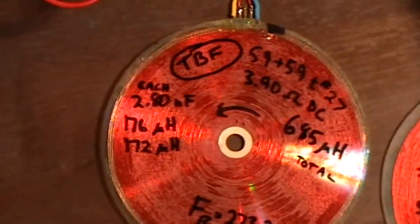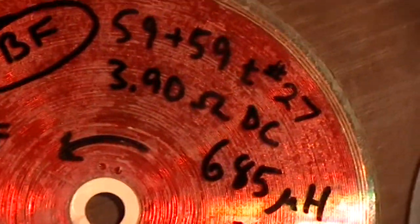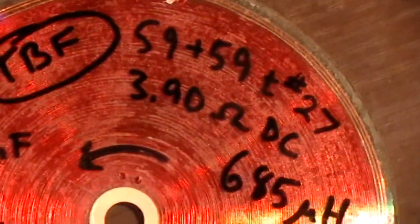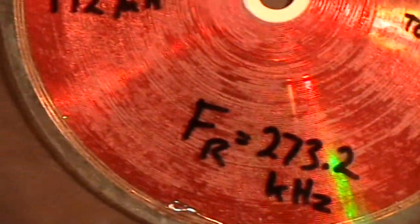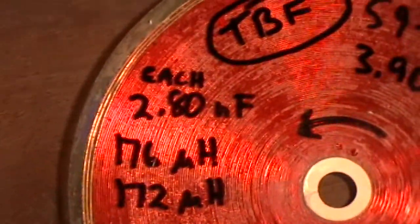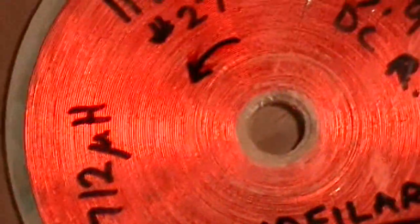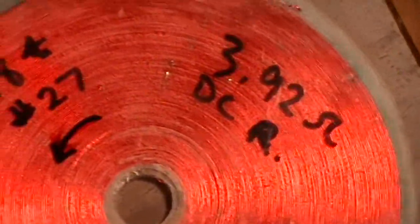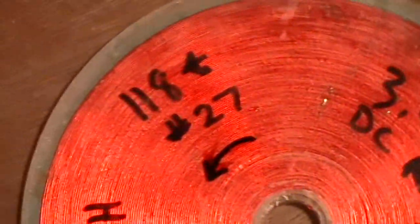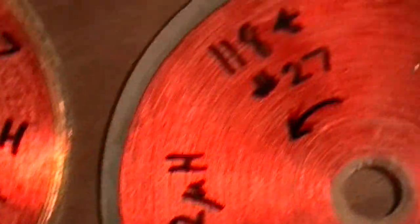This one, the Tesla bifilar coil, has 3.90 ohms DC resistance. The monofilar coil has 3.92 ohms DC resistance, just a hair more. Same number of turns, same wire, slightly more inductance.